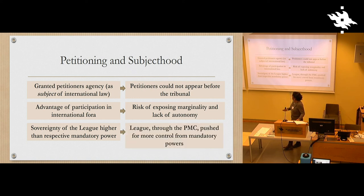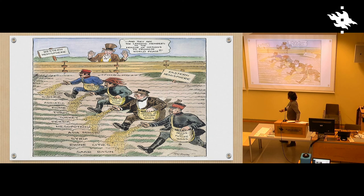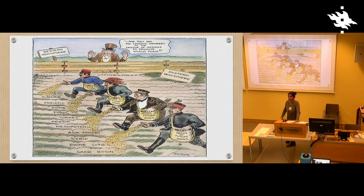The League did have sovereignty above the mandatory power and above everybody else, but the League's solution always entailed pushing the mandatory power to exercise more control. This left questionable what the petitioning process really did for the vulnerable population. And what did it really mean for the mandatory powers who were trying to improve people's lives and 'civilize' everybody? I found a great cartoon where they say they're just sowing the seeds for war — that's really what they did. They came up with the idea in response to rebellion, but what they really did was sow the seeds for more wars and revolutions that happened later.